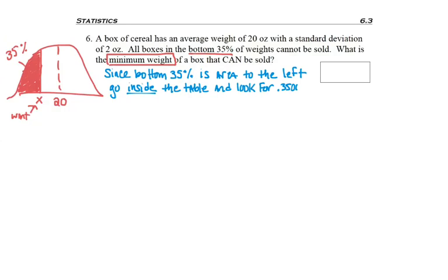Since the bottom 35% is going to give me area to the left, I want to go inside the middle of the table and look for 0.3500 because that's what 35% looks like as a decimal. So I bounce all around the table. Now I know I'm on the negative table because even though the number I'm going to get is going to be a positive weight, since it's on the left half of the curve, it's going to have a negative z-score.